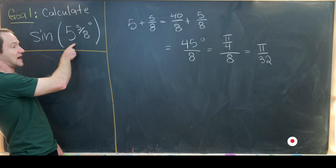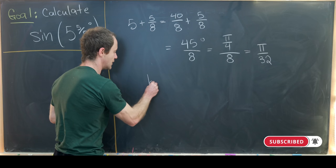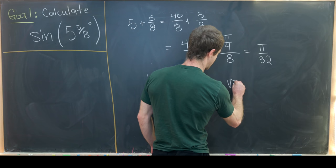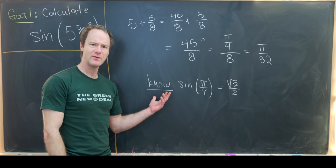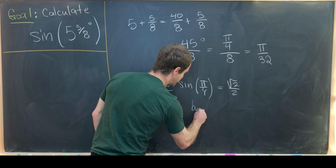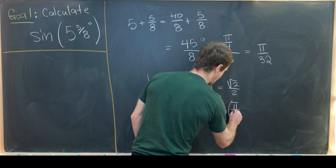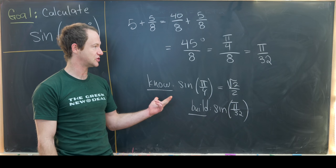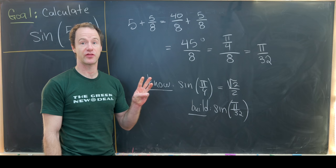How could we do that? We know that sine of pi over 4 equals the square root of 2 over 2 — a well-known value. We can use some trigonometric identity to build our goal value, sine of pi over 32. Notice that pi over 4 divided by 2 is pi over 8, divided by 2 is pi over 16, divided by 2 is pi over 32. So we can use the half angle formula three times.